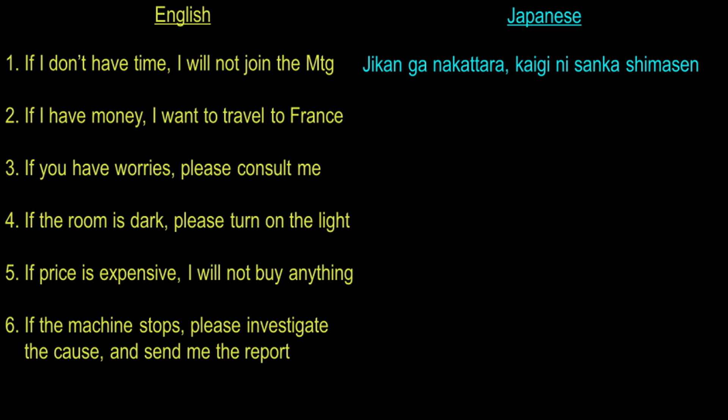Let us go to the second sentence: 'If I have money, I want to travel to France.' France is Furansu, to travel is Ryokou shimasu, and to express want to do something we use the Tai form of the verb. Money is Okane, and have is Arimasu. Since the plain past form of Arimasu is Atta, the translation will be: Okane ga Attara Furansu wo Ryokou shitai desu.